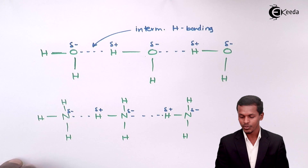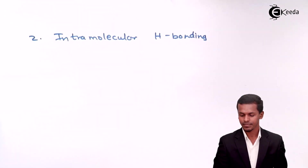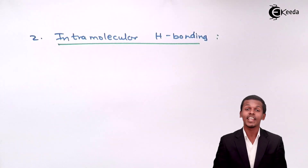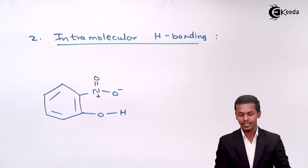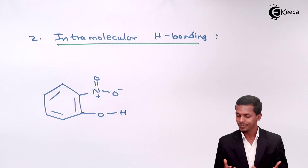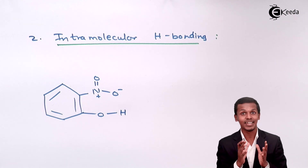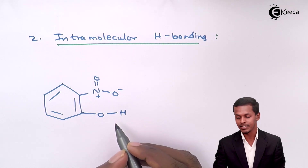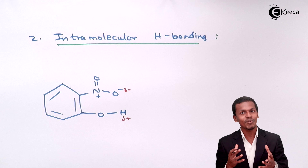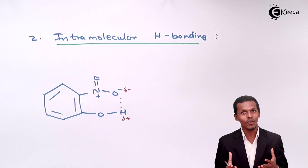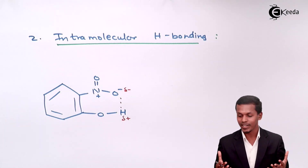The second type is intramolecular hydrogen bonding, which is the kind of hydrogen bonding that takes place within the molecule. An example is ortho-nitrophenol. In this molecule, we can find hydrogen bonding because there is a hydrogen atom and, because of the oxygen, it is partially positive while the oxygen on the other side is partially negative. There is therefore a force of attraction between these two, taking place within the molecule itself. This is called intramolecular hydrogen bonding.